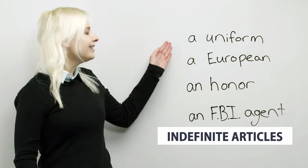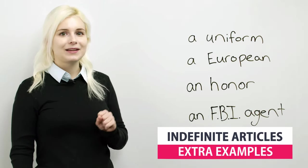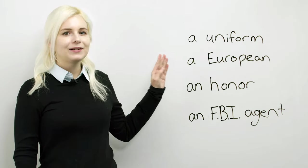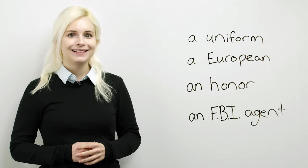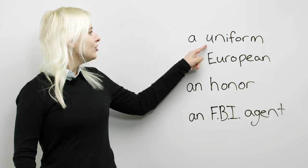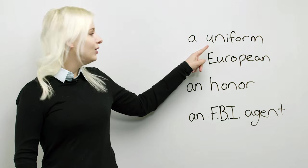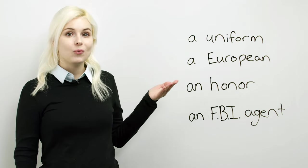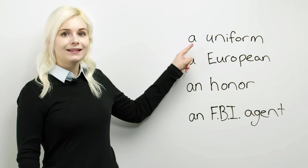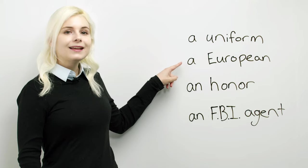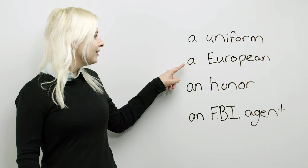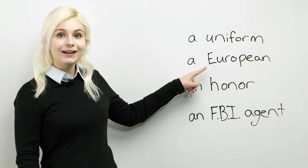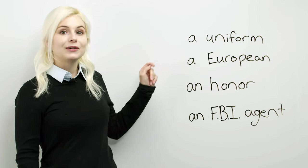Let's take a look at these four examples. Remember, don't look at the letter, but listen to the sound that it makes. Uniform. Uniform starts with the consonant sound Y, so it gets a. Again, a European. European also starts with the consonant sound Y, so a European.